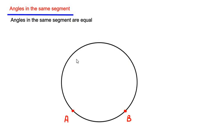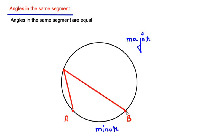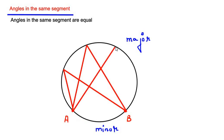Consider a circle with two points A and B on it. These two points divide the circle into two segments: one is the large part called the major segment, and the other is the small part called the minor segment. If these two points make angles in the major segment at various points, all those angles are equal. For example, if one angle is 30 degrees, all the remaining angles in the same segment are also 30 degrees.